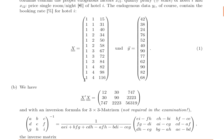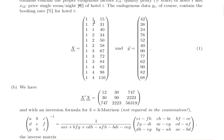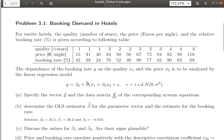The first column is just ones, the second is the stars ordered, and the third is the price per night. The ordering is completely irrelevant — I arranged it that way in the table, but we can rearrange it. It will not change anything in the regression, because only sums appear in the regression and sums are cumulative.